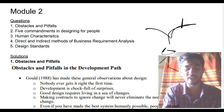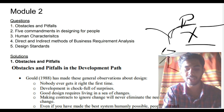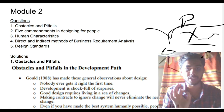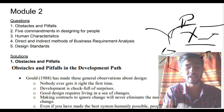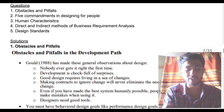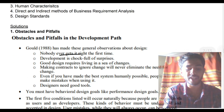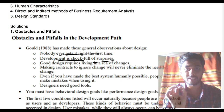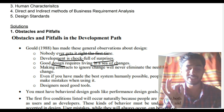On that path he saw many trees and fruits, and then he saw a lake. He dived deep into the lake and crossed to the other side. There was a person standing with a contract who told him to bring good fishers, but did not provide any tools, so he could not bring any. The key point: nobody gets it right for the first time — he took the wrong path. Development is chock full of surprises — he saw many trees. Good design requires leaving a sea of changes — he dived deep into the lake.